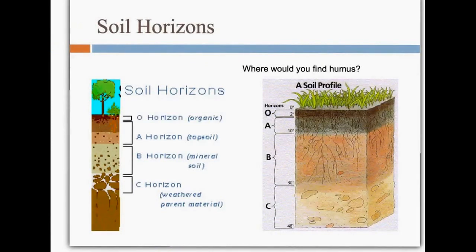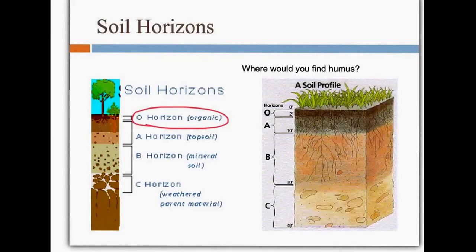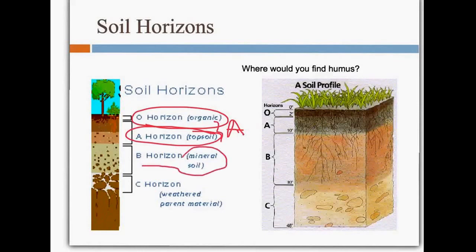Here's another look at our soil horizons. We have our O horizon, which is our organic layer — it contains all the dead leaves and living things. We have our A horizon, which is our topsoil. If there's no O horizon, the A is both of these. We have our B horizon — mineral soil — which contains most of our minerals, also known as the subsoil. We have our C horizon, our weathered parent material. And below our C horizon is our bedrock.